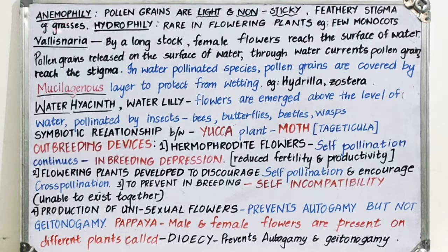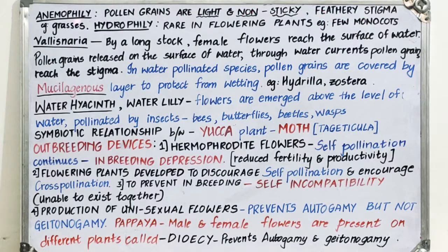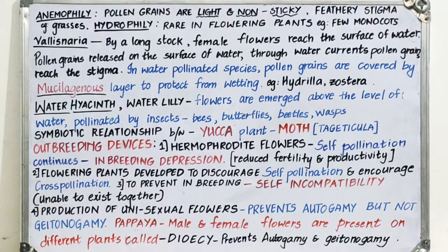The first abiotic type is anemophily — pollination by wind. In anemophily, the flowers will have a carpel and pistil, and we will see feathery stigma. Pollen grains are light and non-sticky. So by wind the pollination takes place, and we see feathery stigma in anemophily-pollinated flowers.